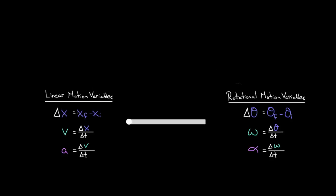In the previous couple of videos, we defined all these new rotational motion variables, and we defined them exactly the same way we defined all the linear motion variables. So angular displacement was defined the exact same way we defined regular displacement — it's just the angular position as opposed to the regular position. Similarly, angular velocity was angular displacement per time, just like velocity was regular displacement over time. And angular acceleration was the change in angular velocity per time, just like regular acceleration was the change in regular velocity per time.